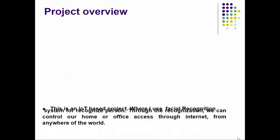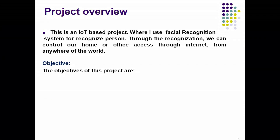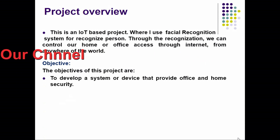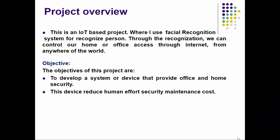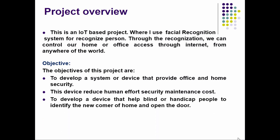First, project overview. This is an IoT-based project where I use a facial recognition system to recognize a person. Through the recognition we can control our home or office access through the internet from anywhere in the world. The objectives are to develop a system that provides office and home security, reduces human effort and security maintenance cost, and helps blind and handicapped people identify newcomers and open the door.